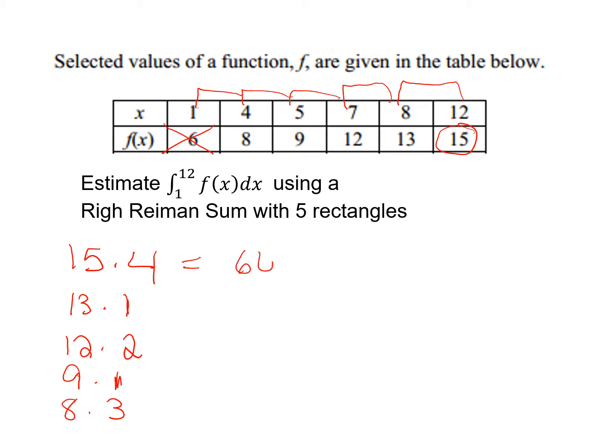So that would give me 60, 13, 24, 9, and 24. So the approximate area under the curve from 1 to 12 of f of x dx is equal to 130. Again, if I added that incorrectly, go with it. Alrighty. So that's how we would find a right Riemann sum using rectangles.